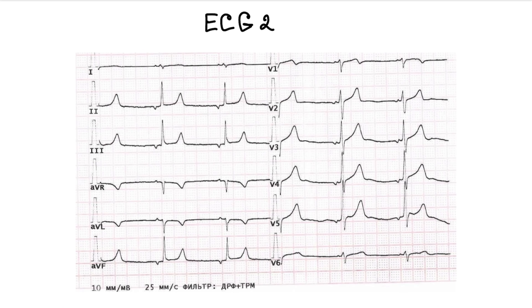Now, let's look at the next ECG. What rhythm is present here? The p-wave is already negative at lead 2 and positive at lead AVR.